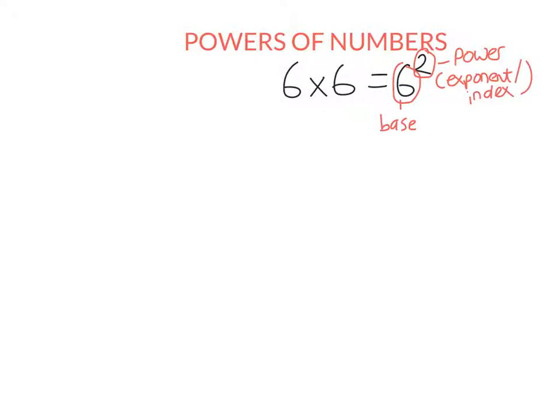So, the power tells you how many times that you multiply the base. So, 6 to the power of 2 is not equal to 12. It means exactly what's written here. You take the base and you multiply it by itself this number of times. So, you multiply 6 by itself twice.